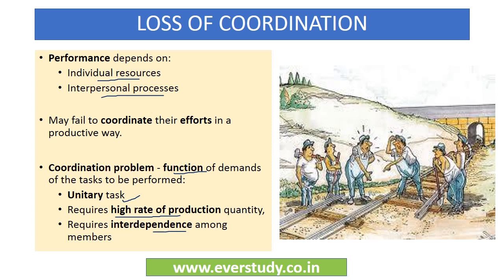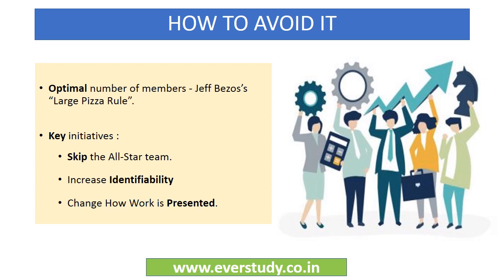Ek optimal number of participants ke baad, the efficiency of a team ghat jaati hai as its size increases, to the extent that a small group can be more productive than a larger one working on the same task. As a result, the Ringelmann effect ki wajah se determining appropriate sizes for work groups can be challenging. Ab jab optimal number of members honge team mein, its then only productivity maximize hogi. So it is suggested to establish Jeff Bezos' large pizza rule for forming a team. Iska matlab hai, as a manager, make sure your team can be fed with just one large pizza. Aur agar ek pizza se zyada lag raha hai, it means your team isn't the optimal size and uske members nahi properly perform kar rahe hai, nahi properly coordinate kar rahe hai. So agar team size reduce nahi ki ja sakti, then there are three key initiatives jo har manager ko implement karna chahiye to maximize their team's productivity and avoid the Ringelmann effect.